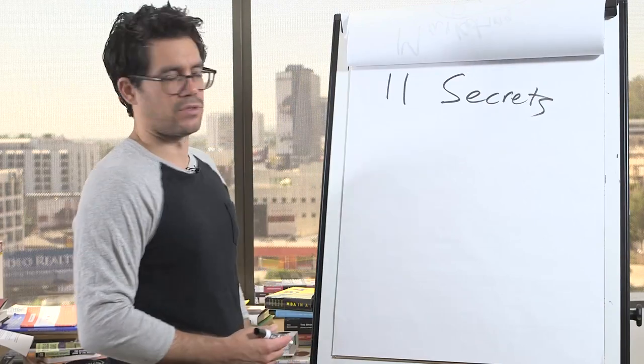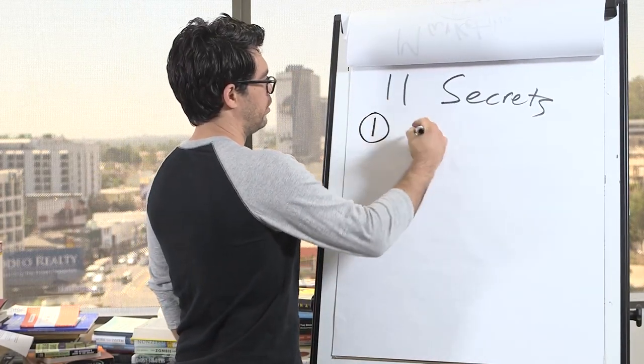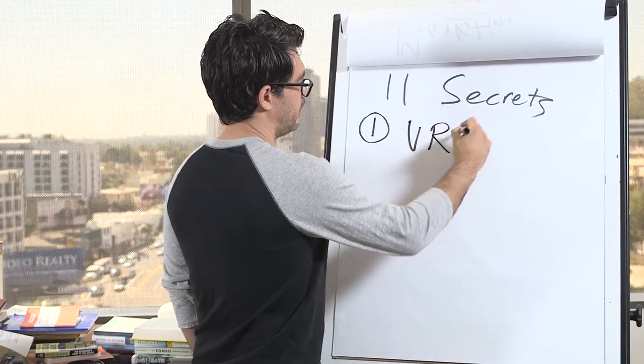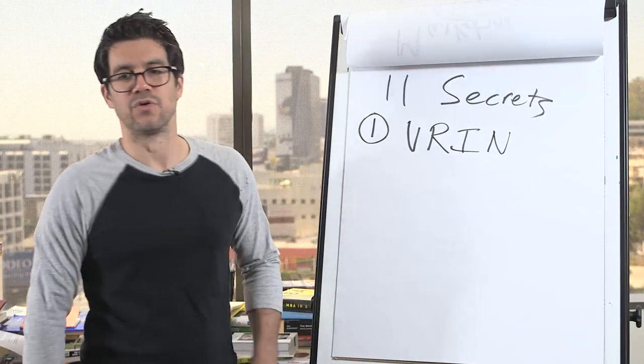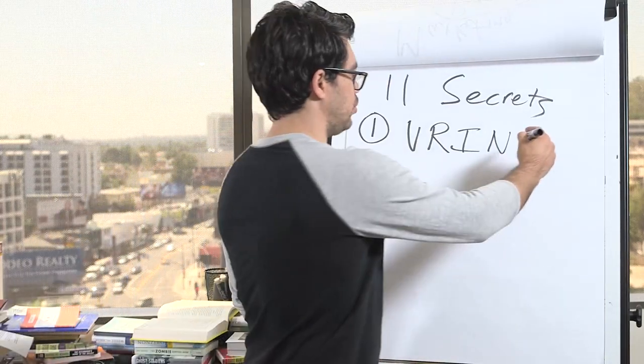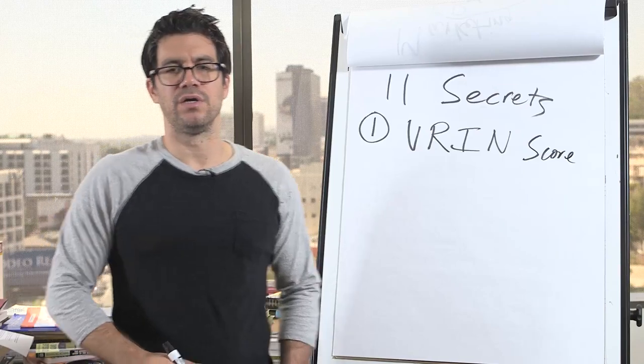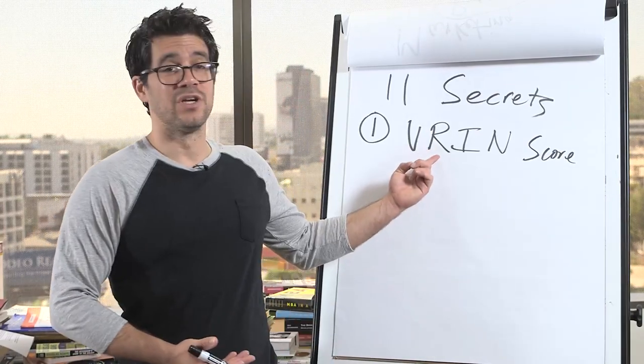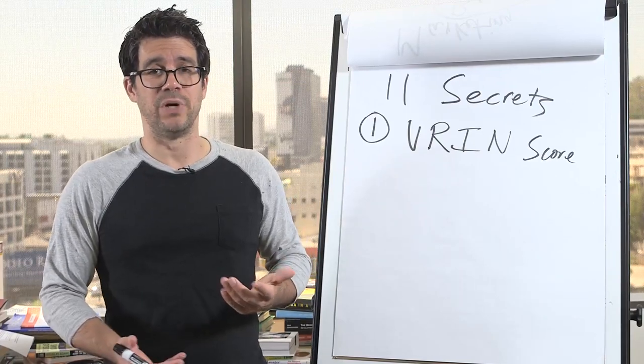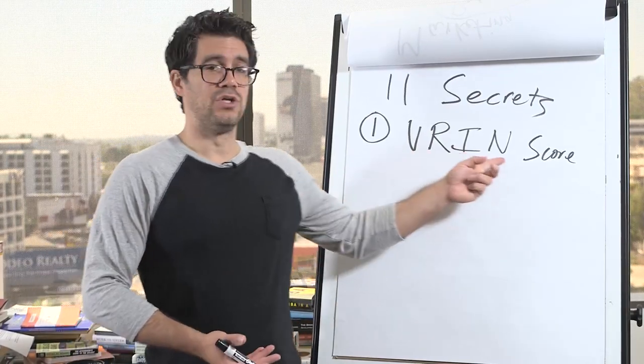So let me try to lay out a few of them. I don't know if I can write all 11 on the board here. I want to make a short video. One. VRIN. That's a term. V-R-I-N. Your VRIN score. This is a huge predictor of your wealth, without a doubt. Now, these are things. I dropped out of college, but if you go to Harvard, if you get an MBA, you'll learn about this.